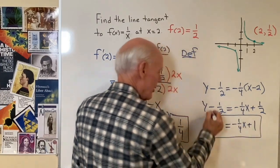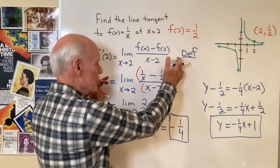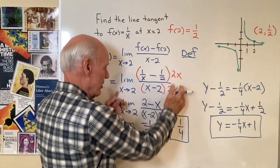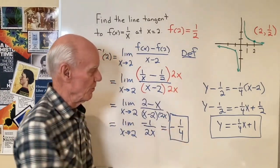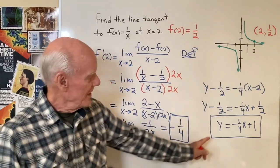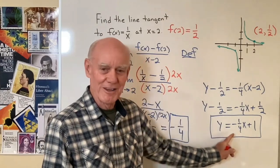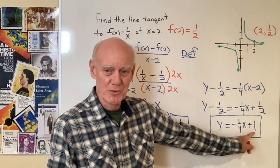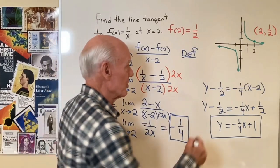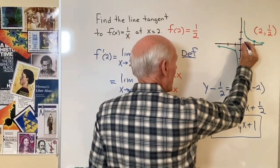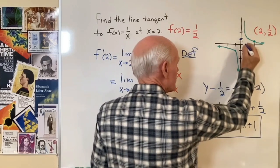There's the equation of the line tangent to that graph at that point. We found it using the definition of the derivative and a little bit of algebra — we took that limit and got negative 1 fourth. And there it is in slope-intercept form: y equals negative 1 fourth times x plus 1. That means that the graph of the line tangent goes through the y-axis at 1 and has a slope of negative 1 fourth.